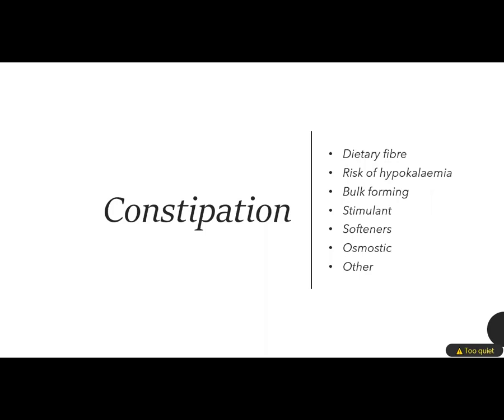All patients that are constipated in general can increase their dietary fiber. You have to be careful when using laxatives because they can lead to hypokalemia. Bulk forming laxatives include bran, ispaghula husk, and methylcellulose — methylcellulose is also a softener. The onset for most bulk forming laxatives is about 72 hours. They can help with small hard stools but can exacerbate flatulence, bloating and cramping. Make sure you maintain a good fluid intake if taking bulk forming laxatives.